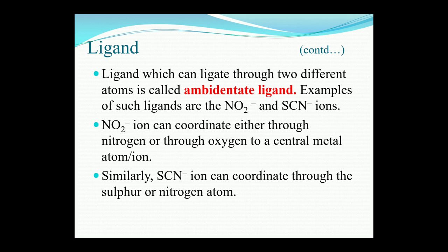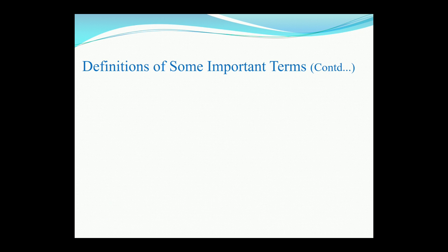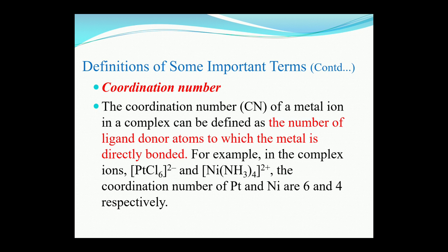A few more important definition terms: what is coordination number? The coordination number of a metal ion in a complex can be defined as the number of ligands or donor atoms to which the metal is directly bonded. For example, in the complex ion hexachloroplatinate the coordination number of platinum is 6, because there are 6 chloride ions present. In tetraamine nickelate ion, there are 4 ammonia molecules, so the coordination number is 4. The number of ligands attached to the central metal atom equals the coordination number.